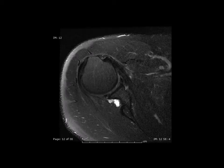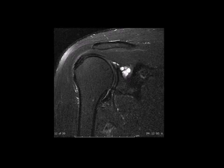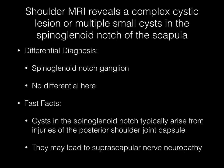Now pause your media player. Images from a T2-weighted shoulder MRI reveal a complex cystic lesion or multiple small cysts in the spinal glenoid notch of the scapula. The differential diagnosis includes spinal glenoid notch ganglion, and there really is no other differential consideration here.